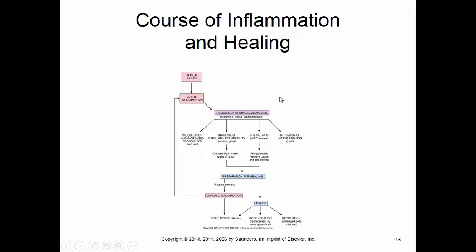The course of inflammation and healing follows a consistent process. Some kind of injury causes acute inflammation — short and severe — releasing chemical mediators, particularly bradykinins, histamines, and possibly prostaglandins. This causes vasodilation, increased blood flow, increased permeability, chemotaxis, and irritation of nerve endings — the pain. The area is walled off and a clot is created around the damage. Phagocytosis occurs, removing debris and preparing the area for healing. If the underlying cause persists, we end up with chronic inflammation and eventually scar tissue. If the cause stops, healing can occur through regeneration or resolution.